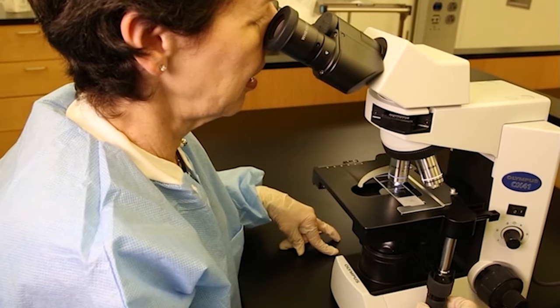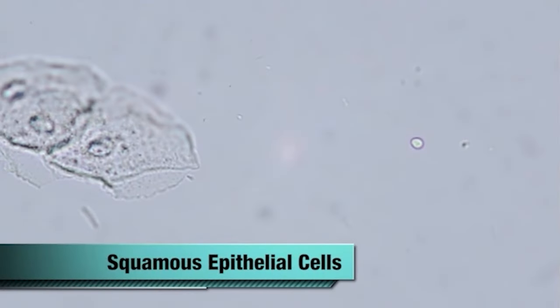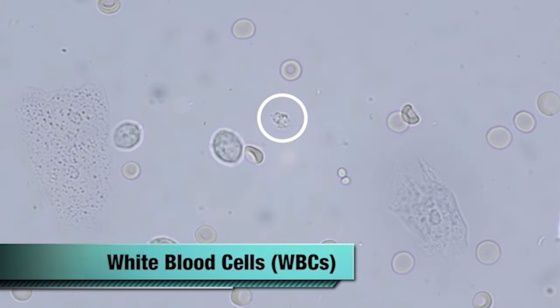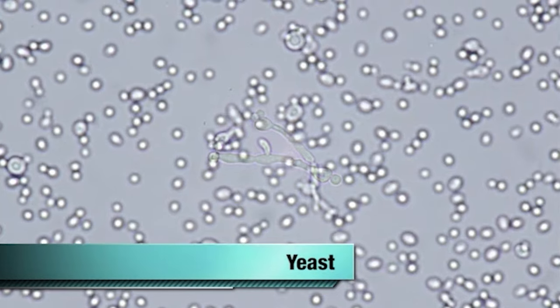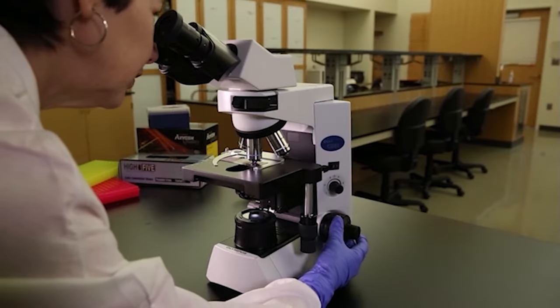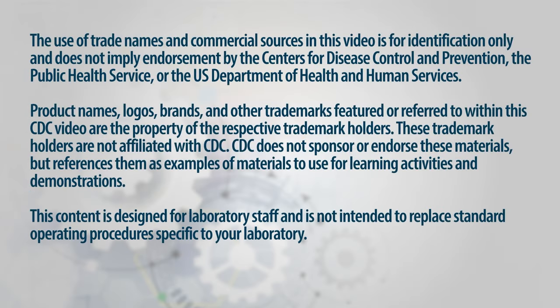It's important to also report other objects seen in a wet mount such as squamous epithelial cells, clue cells, white blood cells, red blood cells, and yeast. These findings are important to the physician to rule out infection.